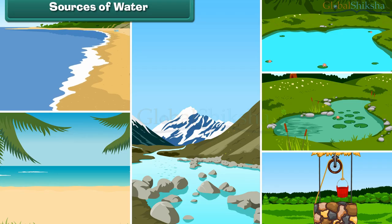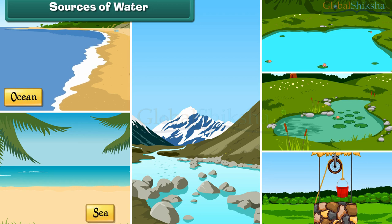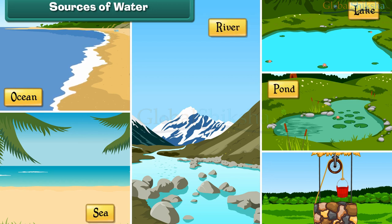Sources of water: oceans, seas, rivers, lakes, ponds, and wells are sources of water on earth.